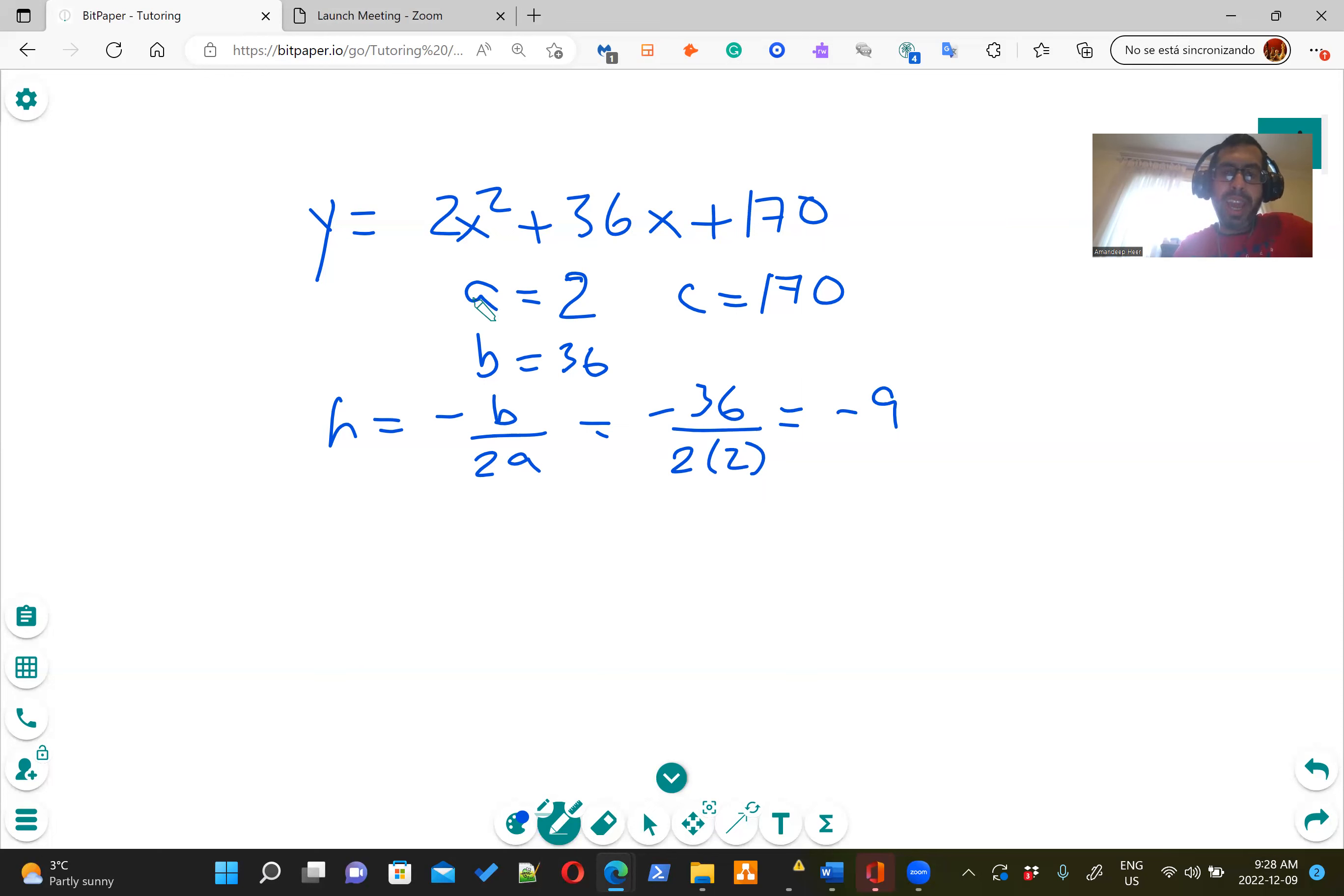Now, if I want to get K, all I do is plug negative 9 into this equation. Wherever I see X, I'm going to replace it with negative 9. So it's going to be 2 times negative 9 squared plus 36 times negative 9 plus 190. If you do all the math work and algebra, this should be equal to 8. So that's your K.